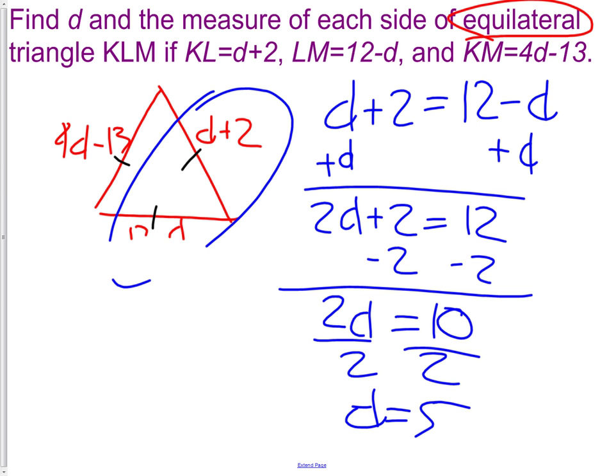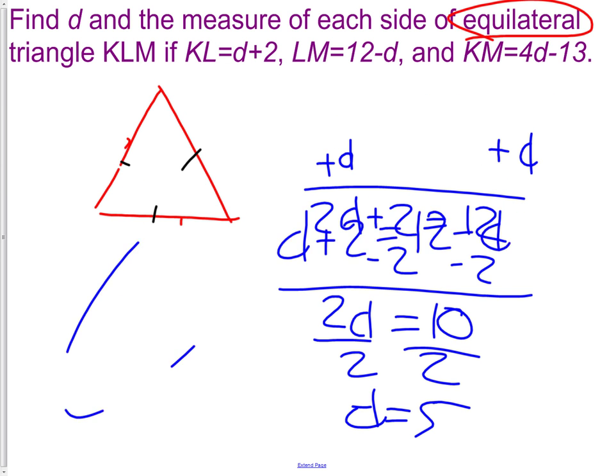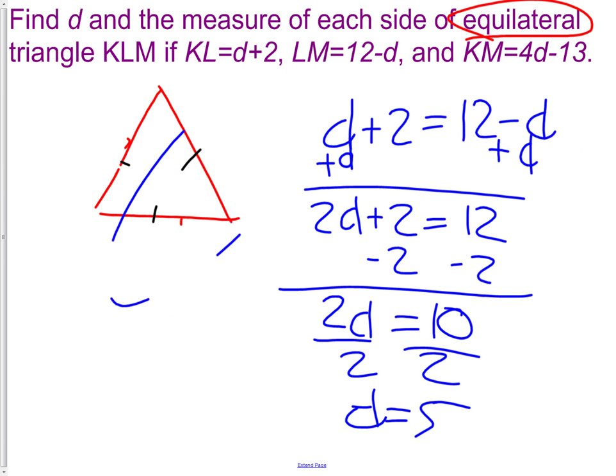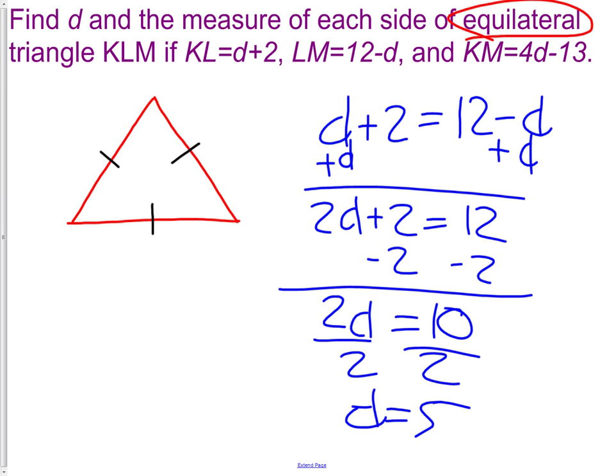Now I'm going to go back to my original picture here. I'll erase a few parts of it. If you remember, I had the measurement of d+2 on this side of the triangle. We now know that d is 5. That means the length of that side of the triangle would be 5+2, which would be 7.